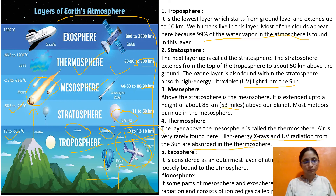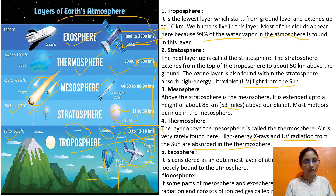The exosphere is considered the outermost layer of the atmosphere and is very loosely bound by the air. You can see satellites and space shapes here, and the temperature is around 1200 degrees Celsius.